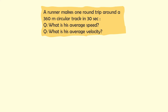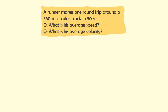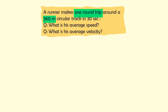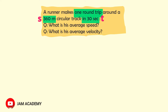Consider that a runner makes one round trip around a 360-meter circular track in 30 seconds. What is his average speed and what is his average velocity? First, I read it and highlight the given data: one round trip means the initial and final position are the same; 360-meter track means the runner covers 360 meters of distance s; and time t equals 30 seconds.